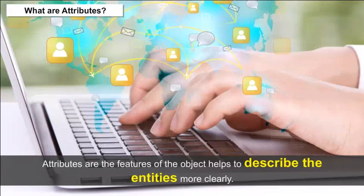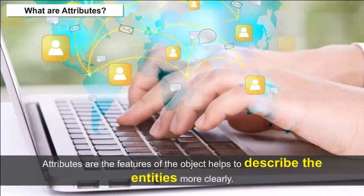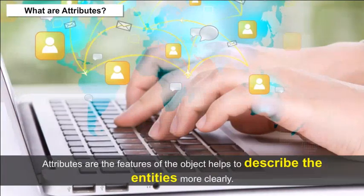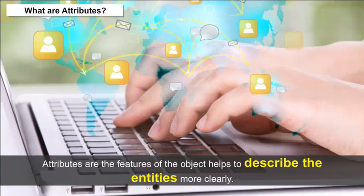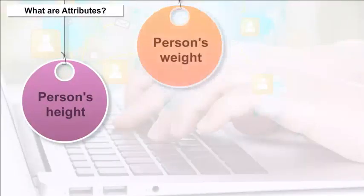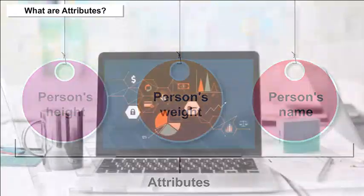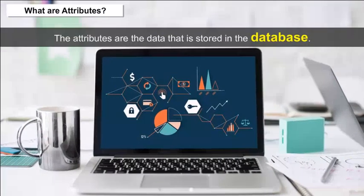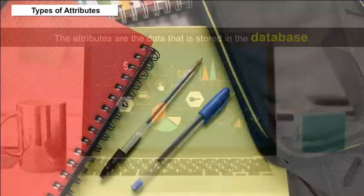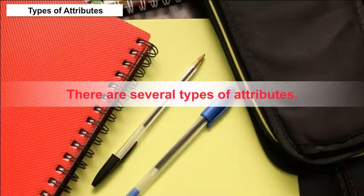What are attributes? Attributes are the features of the object that help to describe the entities more clearly. For example, in case of a person, his height, weight, name, etc. are attributes. The attributes are the data that is stored in the database.